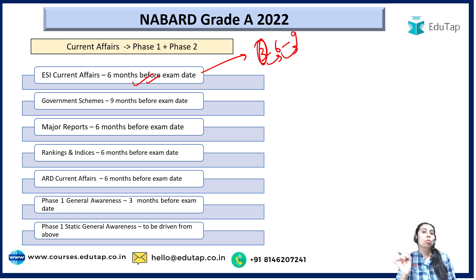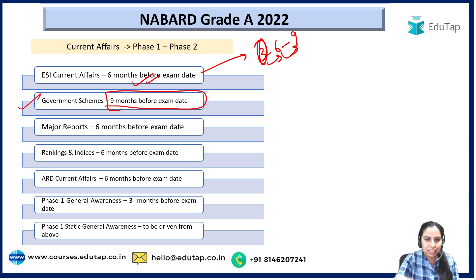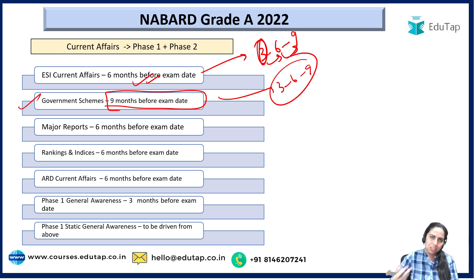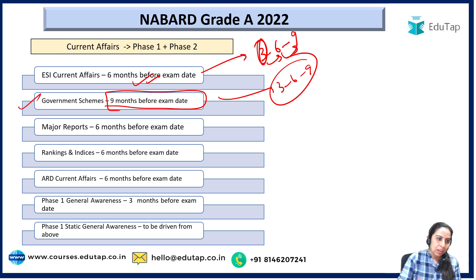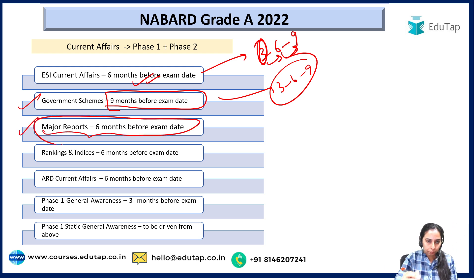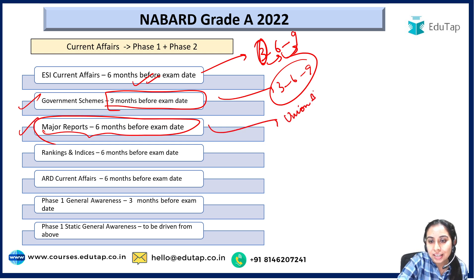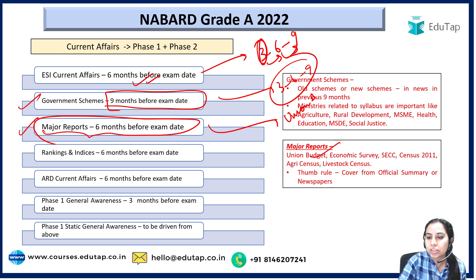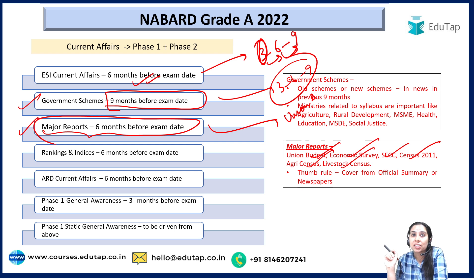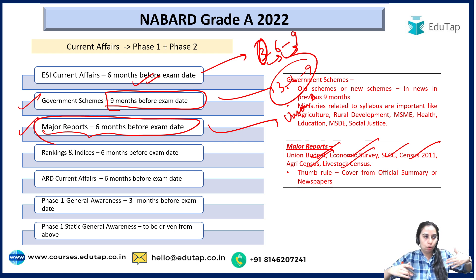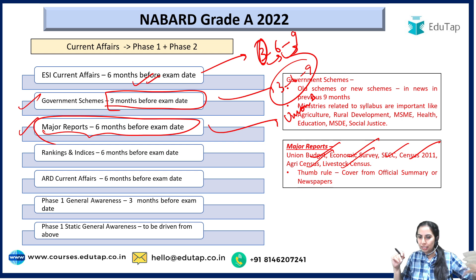ESI current affairs here does not include schemes — I have put them separately. Government schemes you have to do for 9 months. The 369 rule applies, but my suggestion is go for 9 months because the same schemes are usually repeated again and again. Then there are major reports — Union Budget, Economic Survey, NSSO, census, agri-census, livestock census. All these are your major reports, and current affairs includes all these things. That is why current affairs is so important — the width is quite high, covering 6 to 7 months, plus budgets, surveys, reports, schemes, etc.